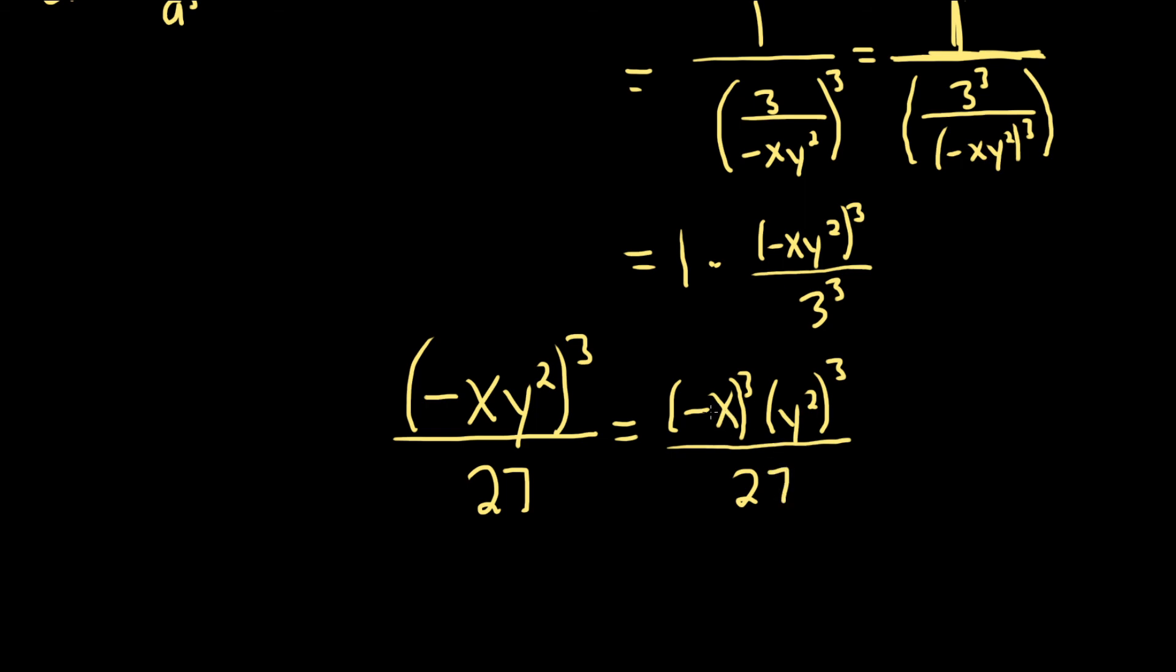When you cube a negative number, you keep the negative, okay? So it's just going to be x cubed, because it's odd. Whenever this number is odd, you keep the negative. So if it was like seven, the negative stays. If it's nine, the negative stays. If it's like an even number, it goes away. And then here, you multiply two times three is six. And there we have it over 27. And that would be the final answer.